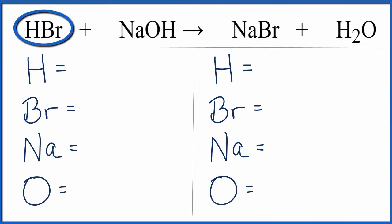In this equation, we have hydrobromic acid plus sodium hydroxide yields sodium bromide and water.